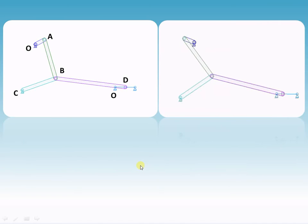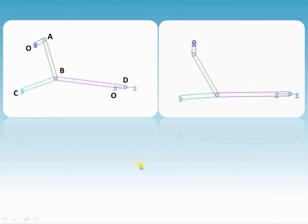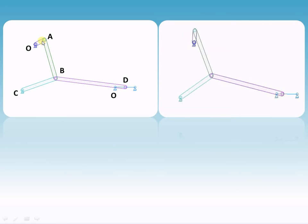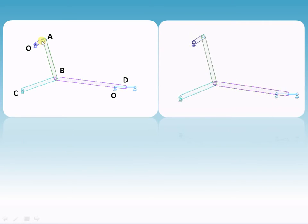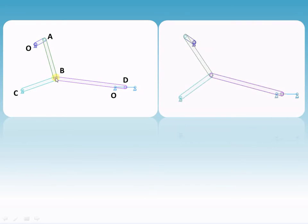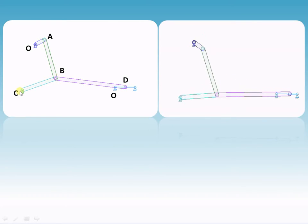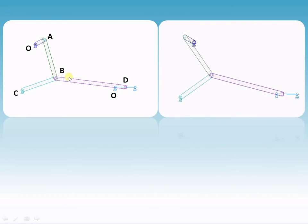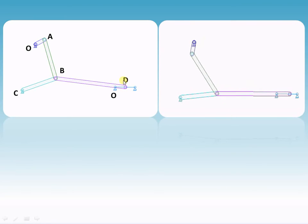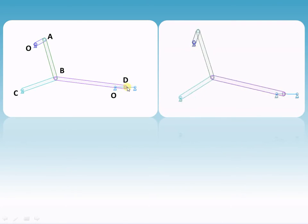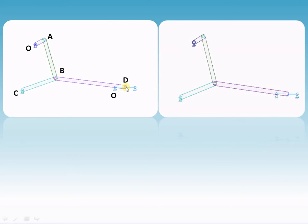Let us try to understand how to draw the velocity diagram for the mechanism as shown. Here OA is a crank rotating in the clockwise direction. AB is the oscillating link, BC is also an oscillating link, PD is also oscillating, and D is the slider which is sliding along the straight line path as shown in the animation.